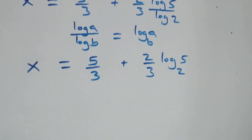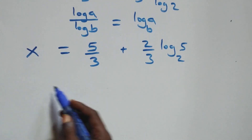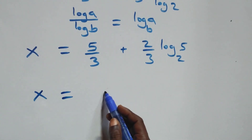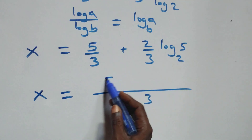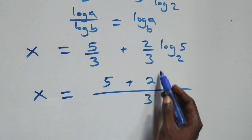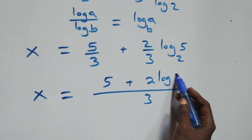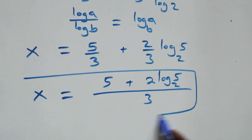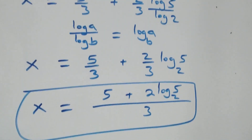We bring this together as one fraction. The value of x is therefore 5 plus 2 log₂5, all over 3.